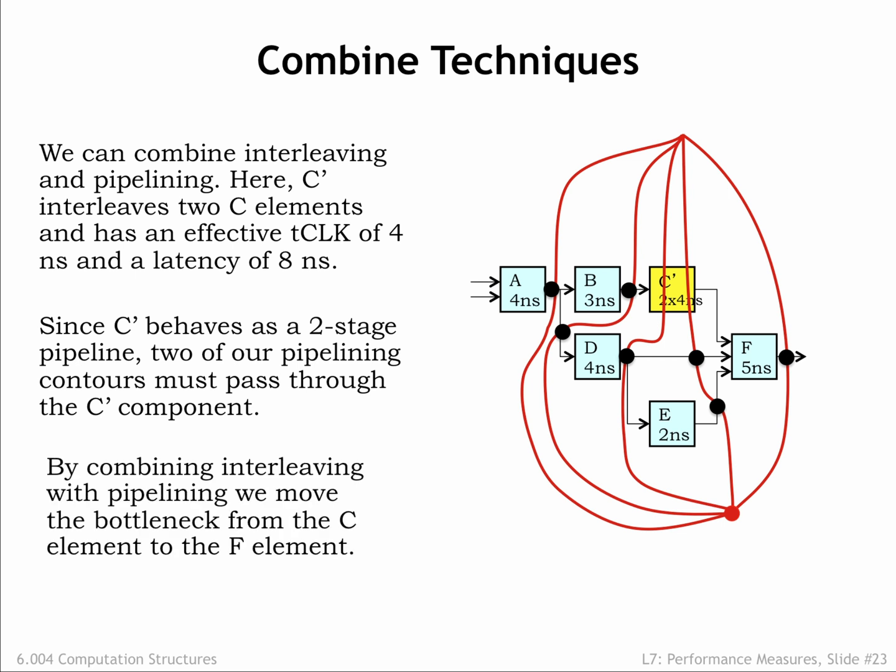Somewhat optimistically, we specified the C' minimum T clock to be 4 ns, so that means that the slow component which determines the system's clock period is now the F module, with a propagation delay of 5 ns. So, the throughput of our new pipeline circuit is 1 output every 5 ns, and with 5 contours it's a 5-stage pipeline, so the latency is 5 times the clock period, or 25 ns.